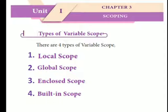Types of Variable Scope: There are four types of variable scope: local scope, global scope, enclosed scope, and built-in scope.